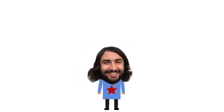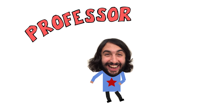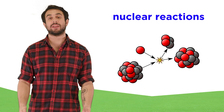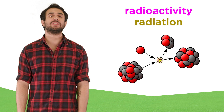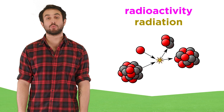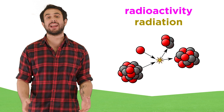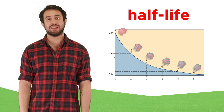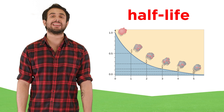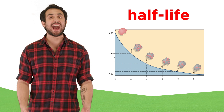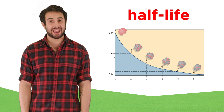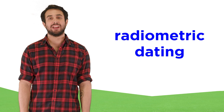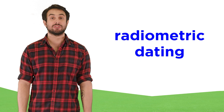Professor Dave here, let's do some dating. In a previous tutorial, we learned all about the different nuclear reactions that nuclides can undergo, which helped us understand what radioactivity and radiation are. If this sounds unfamiliar, definitely check out that tutorial first, as all of that knowledge will be assumed in this one. If we are up to speed, then we now understand that various radioactive nuclei will decay at different rates depending on their half-lives, and we have developed a number of practical applications for this phenomenon in a variety of scientific and medical fields. One such application is something called radiometric dating, so let's learn about this now.